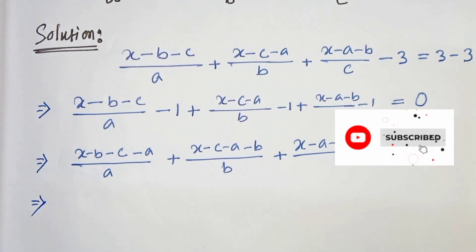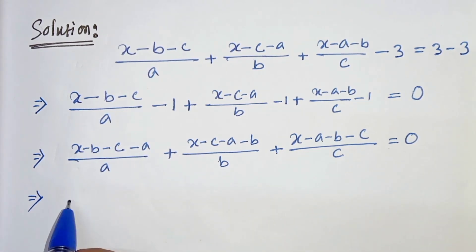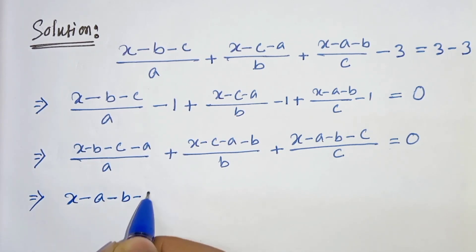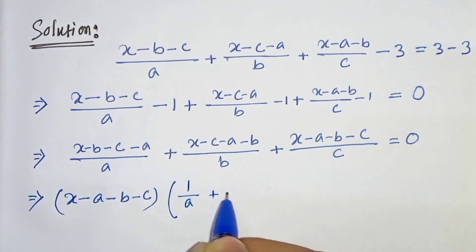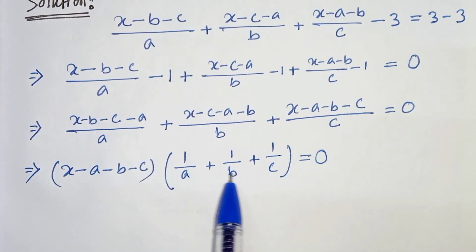In the next step we can see here it is a common term x minus b minus c minus a. So we will take common x minus a minus b minus c and we will be left with 1 by a plus 1 by b plus 1 by c equals 0.